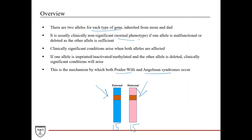If you knock one of these out, it doesn't matter because you still have the other one expressed, and that's sufficient to have a normal phenotype. Where you get clinically significant conditions is when you lose both of these genes, because then there's no expression at all. An example of where this can occur is when one allele gets imprinted, inactivated, or methylated, and then the other allele gets deleted by some kind of mutation or microdeletion — and a clinically significant condition arises.